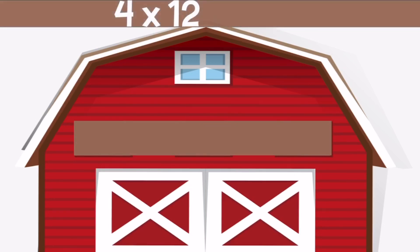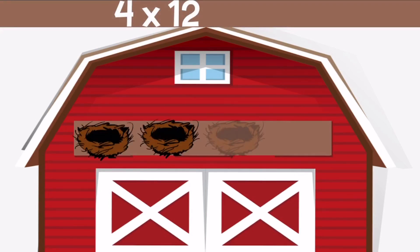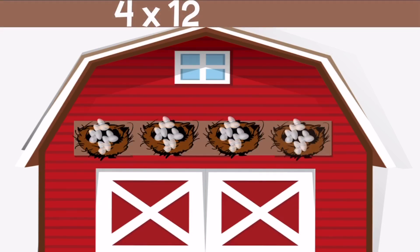4 times 12 means we have four nests with 12 eggs in each nest. If we count up all the eggs we get 48.